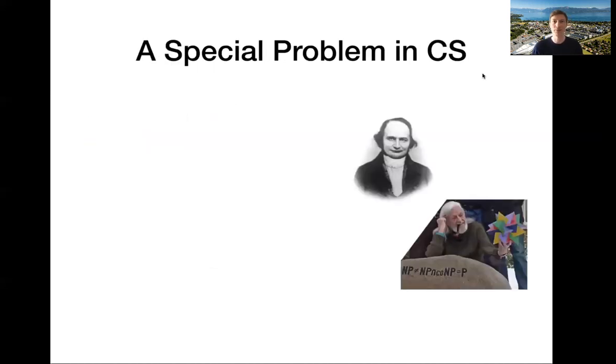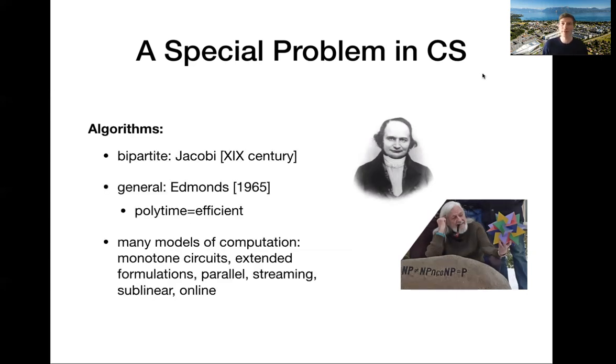This is a special problem in computer science. Here I have two photos of two famous characters. The first one is Jacobi, who invented an algorithm for the bipartite case already in the 19th century. The second picture is of Jack Edmonds, who gave the algorithm for general graphs much later in 1965. His paper was incredibly influential, and he made a case that we should think of efficient computation as polynomial time computation.